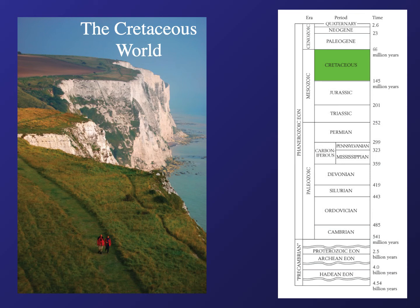Today we're going to talk about the Cretaceous. This is the last period that the Mesozoic era lasted for, and the end-Cretaceous mass extinction is known as the KT boundary — the boundary between the Mesozoic and the Cenozoic, which is the recent era we're in now. This is the end time of the dinosaurs.